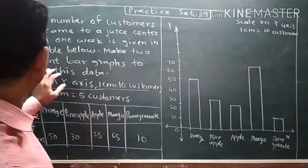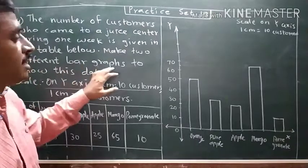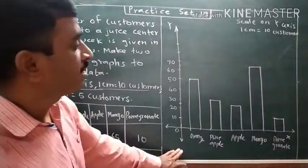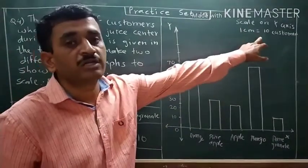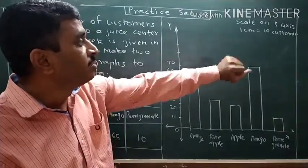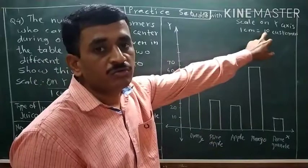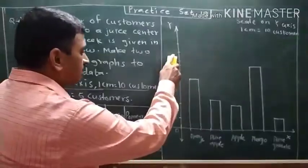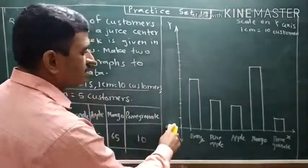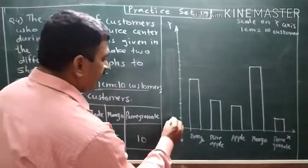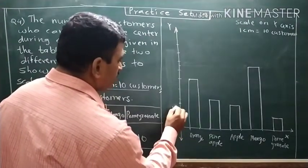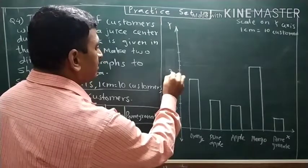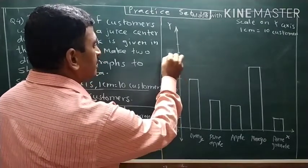In the question, they told us to make two different bar graphs to show the same data. Now one bar graph is complete with the scale: one centimeter is equal to ten customers. Now for the second bar graph, we have to use the scale: one centimeter is equal to five customers. So here we are changing the y-axis to: five, ten, fifteen, twenty, twenty-five, thirty, thirty-five, forty.